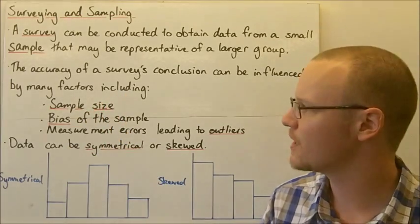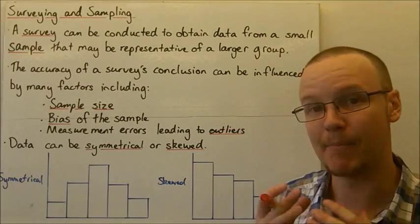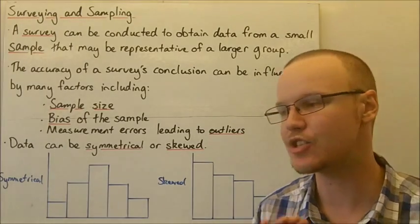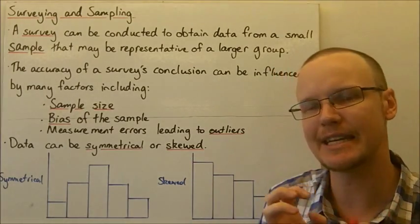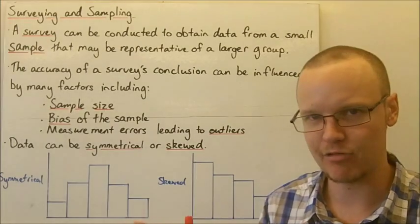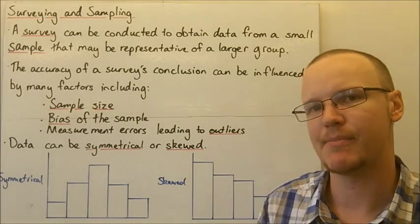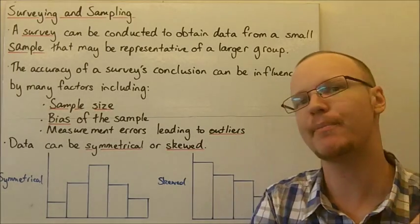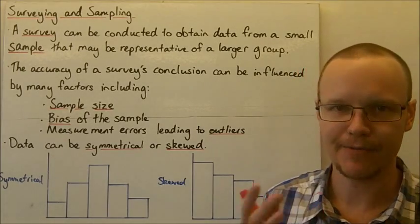Also the bias, the bias of the sample. So a bias is where there is a skewed leaning toward one particular agenda or one particular item that isn't representative of the whole sample.